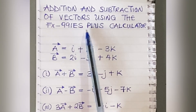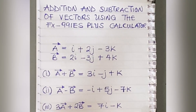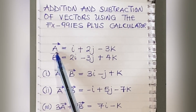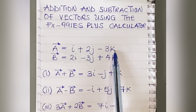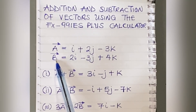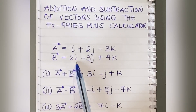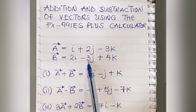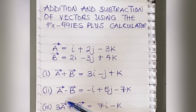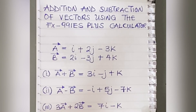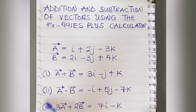For our first example, we're taking vector A to be equal to i plus 2j minus 3k, and vector B to be equal to 2i minus 3j plus 4k. We've already dealt with addition and subtraction of vectors in previous classes, but we're just using this to refresh our memory and confirm answers from the calculator.